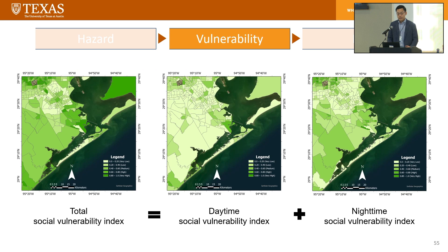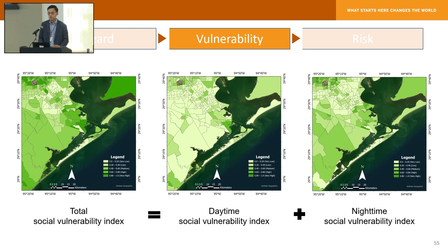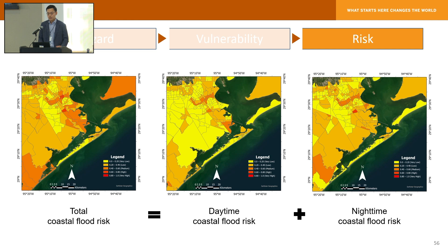In terms of vulnerability, traditionally the social vulnerability index has been widely used, incorporating socioeconomic factors such as poverty level, education, and employment ratio within communities. Through this project, we developed a new methodology that can decompose the social vulnerability index into daytime and nighttime components based on population distribution data. These maps highlight the difference in risk distribution between daytime and nighttime, which was not captured with traditional risk maps.